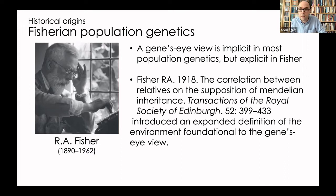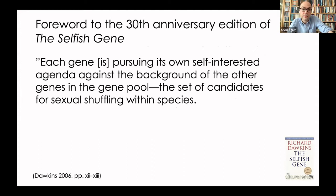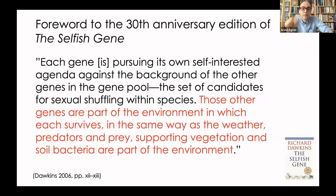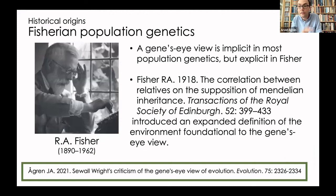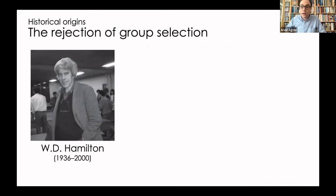This runs through a lot of George Williams' writings. Dawkins, in the foreword to the 30th anniversary edition of The Selfish Gene, writes: 'Each gene is pursuing its own self-interest agenda against the background of the other genes in the gene pool — those other genes are part of the environment in which each gene survives, in the same way as the weather, prey, and soil bacteria are part of the environment.' I think Fisher stands above the rest when it comes to the origin of the gene's eye view, and many technical disagreements can be traced back to disagreements between Fisher and Wright.